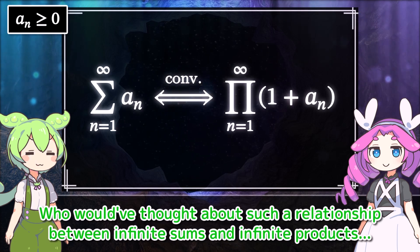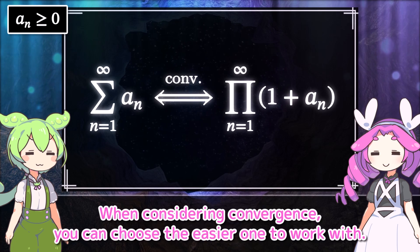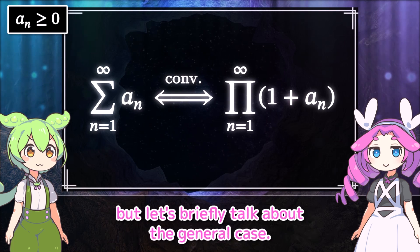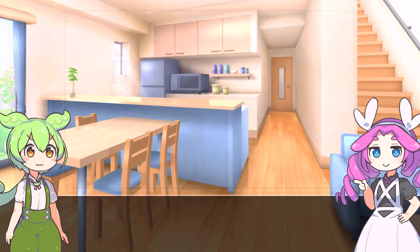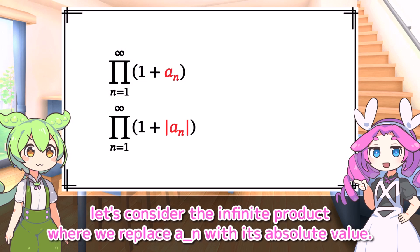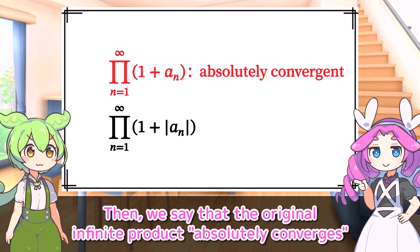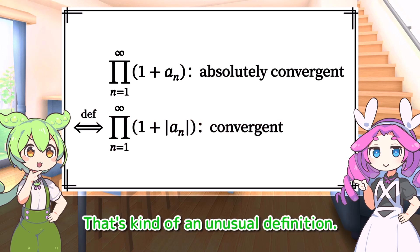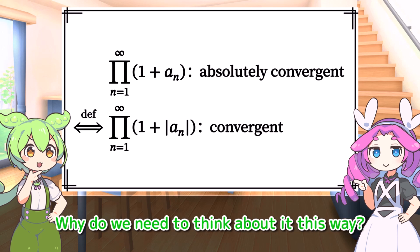Who would've thought about such a relationship between infinite sums and infinite products? It's really surprising. When considering convergence, you can choose the easier one to work with. By the way, we assumed that a_n is non-negative this time. But let's briefly talk about the general case. For an infinite product in this form, let's consider the infinite product where we replace a_n with its absolute value. Then we say that the original infinite product absolutely converges if this modified infinite product converges.